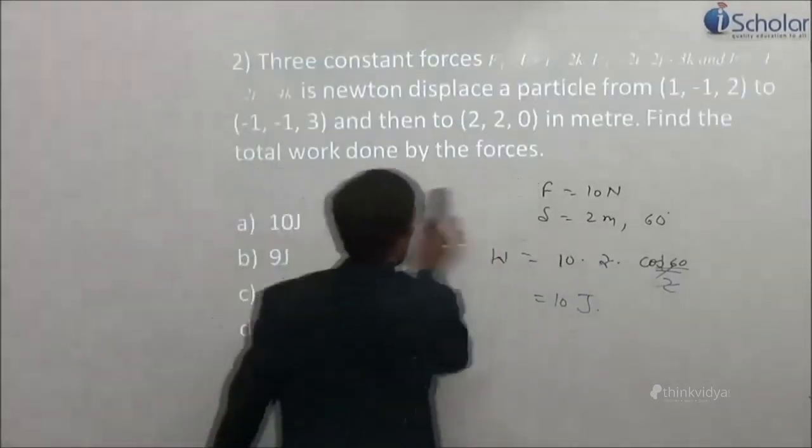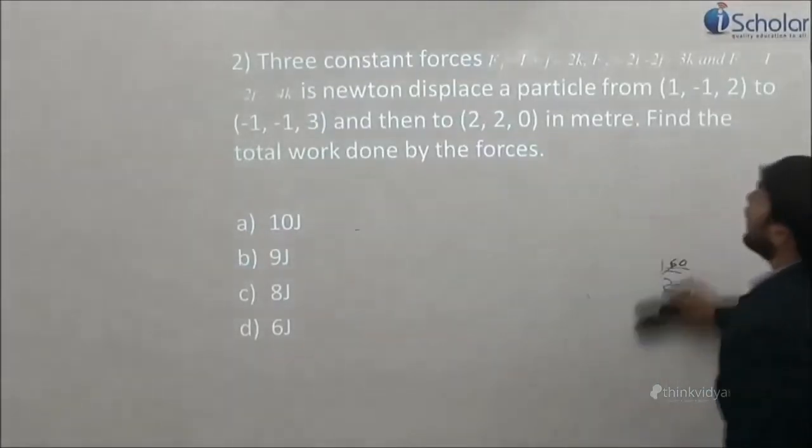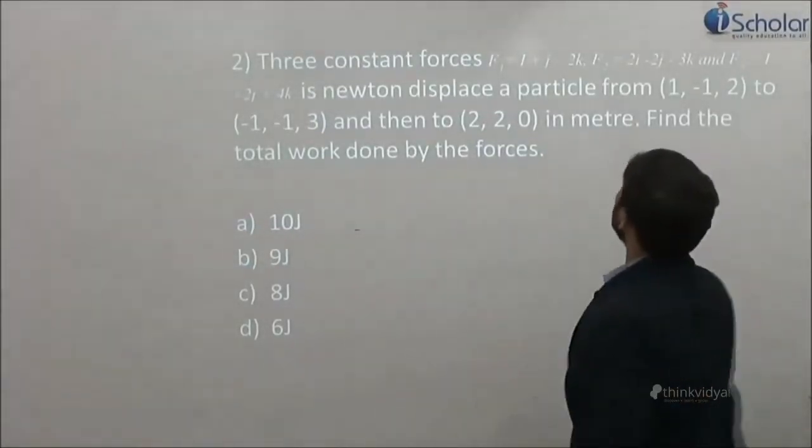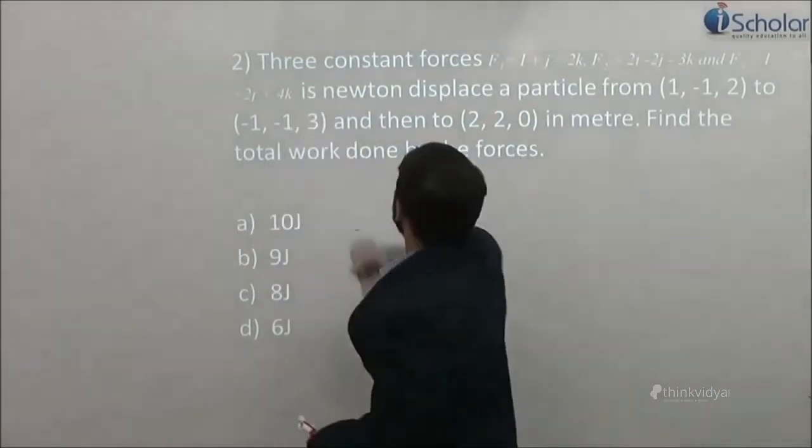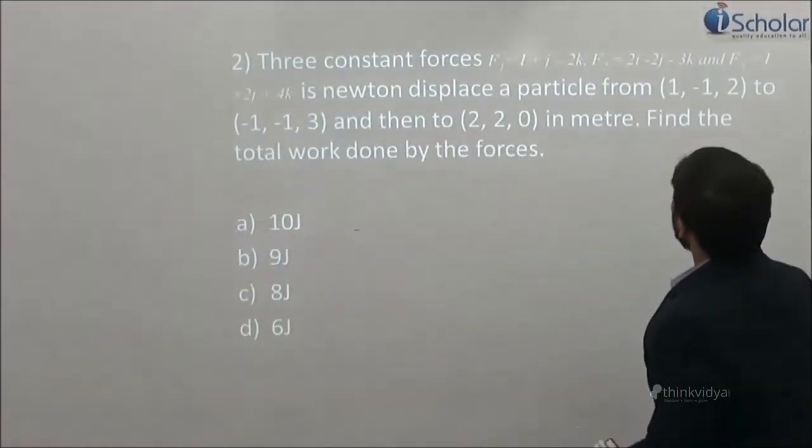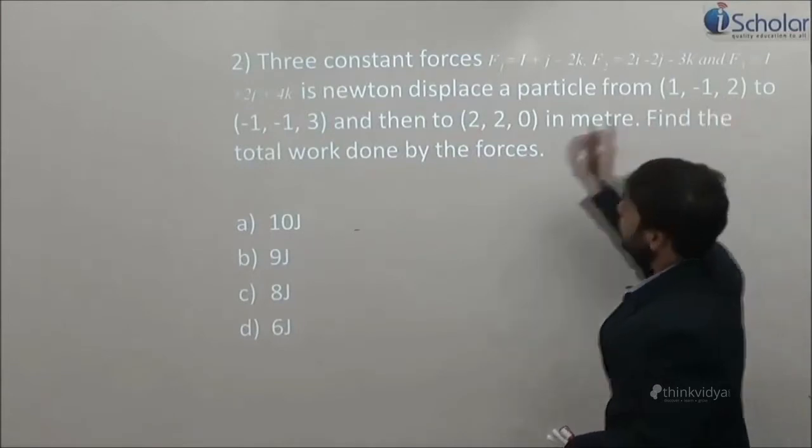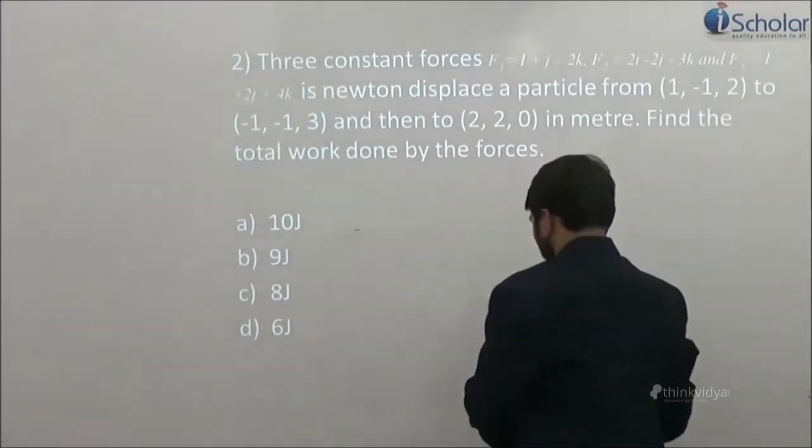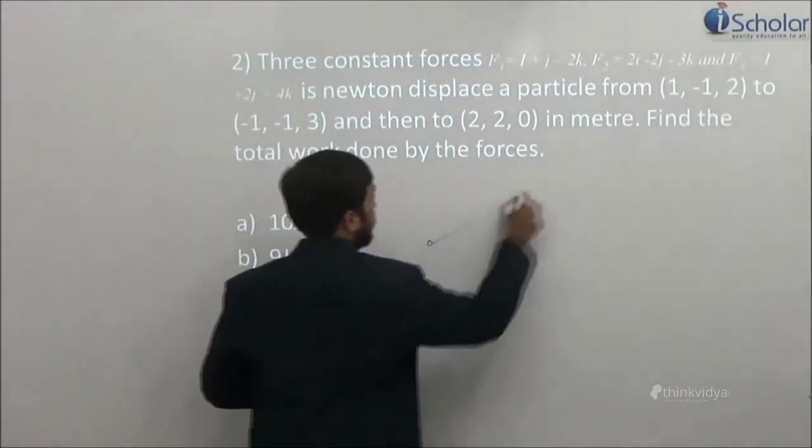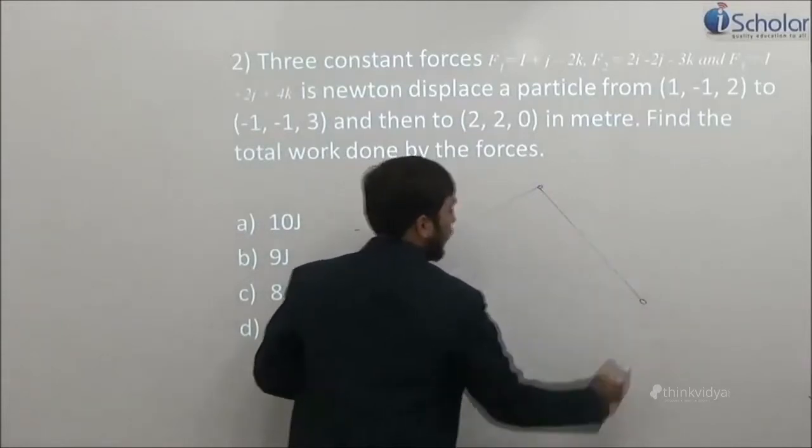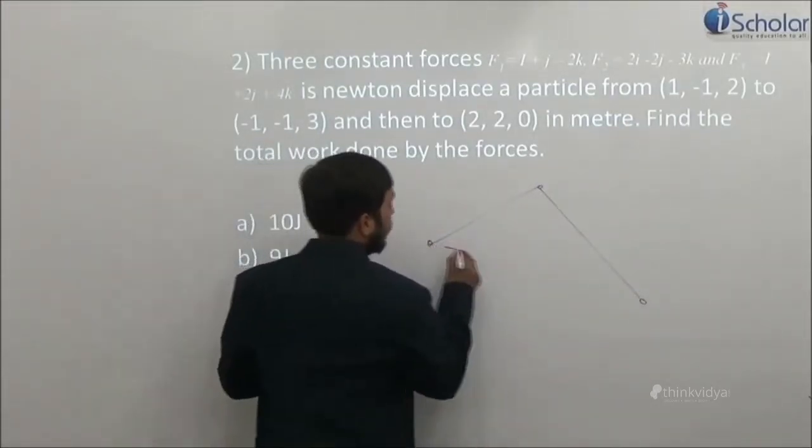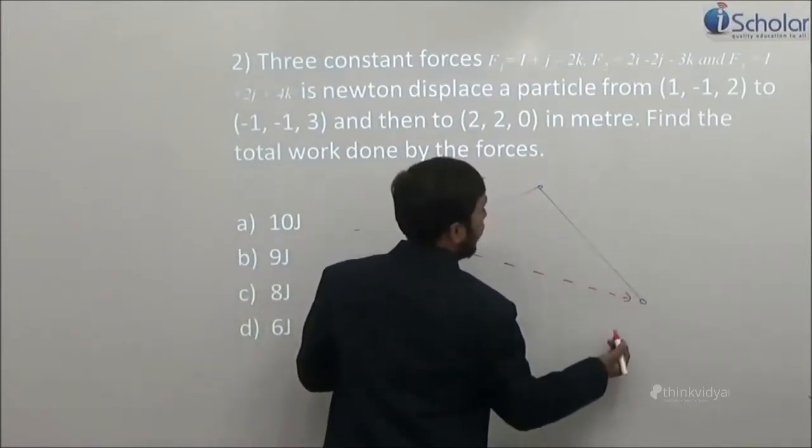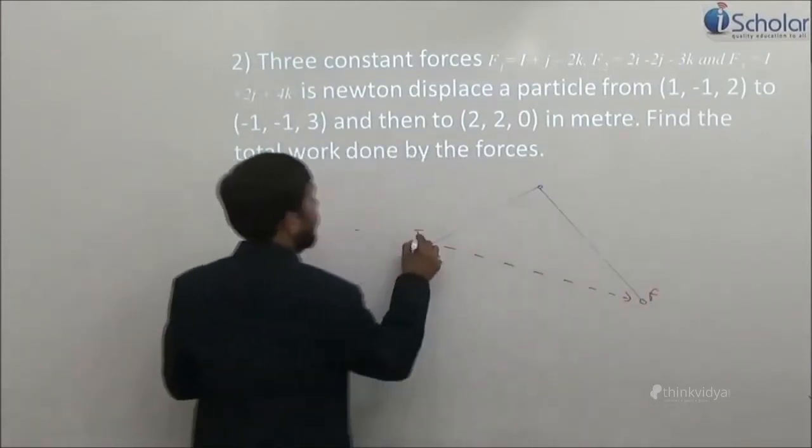Shall we move on to question number 2? Question number 2 states that 3 constant forces, this, this and that in Newton, displace a particle from this to this and then to this. Now my first question is what is the displacement? Because they went like this, you know very well that the displacement will be this only, and how it will be calculated? Final minus initial.